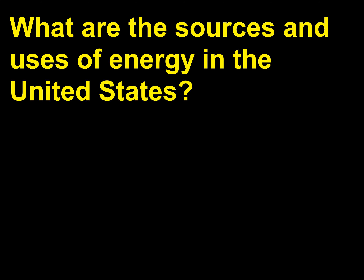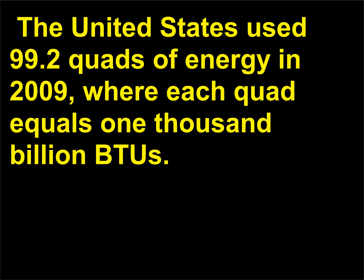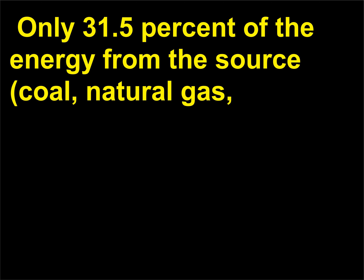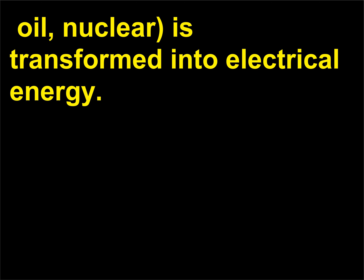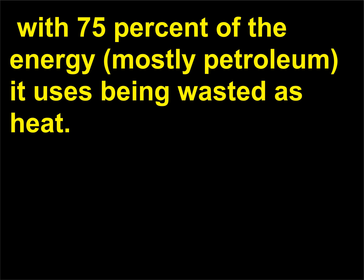What are the sources and uses of energy in the United States? The United States used 99.2 quads of energy in 2009, where each quad equals 1,000 billion BTUs. Electrical generation, at 39.97 quads, is very inefficient — only 31.5% of the energy from sources such as coal, natural gas, oil, and nuclear is transformed into electrical energy. The transportation industry is also wasteful, with 75% of the energy, mostly petroleum, being wasted as heat.